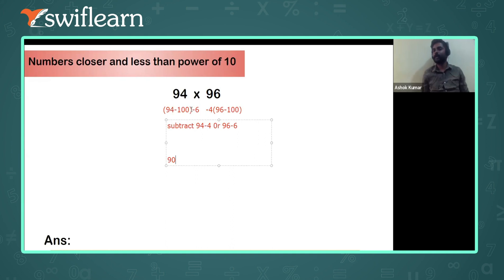6 into 4. Minus into minus is plus. 6 times 4 is 24. The answer will be 9024. Is it clear?